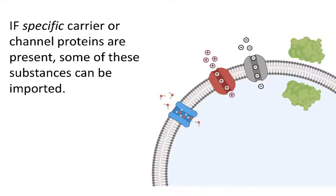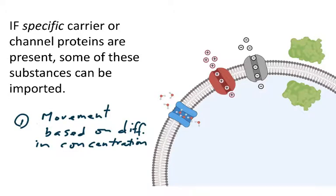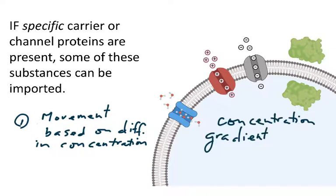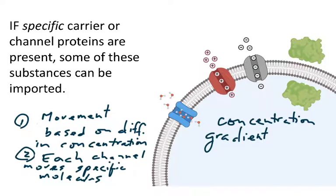A couple of things to keep in mind. The first is that the movement of molecules with passive transport is based on differences in concentration inside the cell versus outside the cell — we describe this as a concentration gradient. The second thing is that each channel is selective in terms of what molecules it will allow to pass through. You're not able to pass a negative ion through a channel specialized for the movement of positive ions. Remember, everything depends on shape.